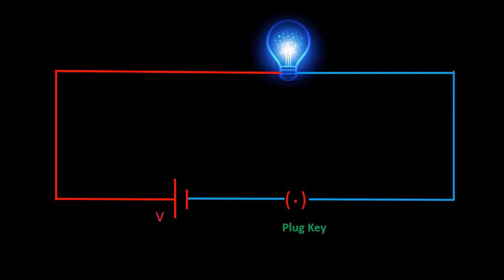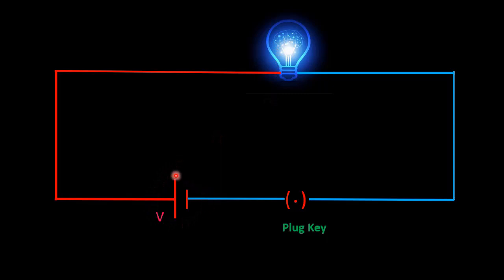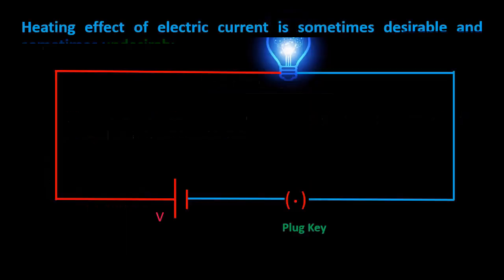Consider a simple circuit where a bulb is connected to a battery. When the switch is on, current flows and the bulb glows. However, 100 percent of the energy given out by the battery is not utilized by the bulb — a small amount is given out by the wire in the form of heat, so some energy is wasted.